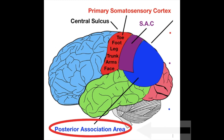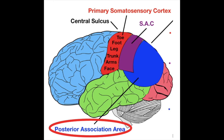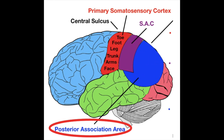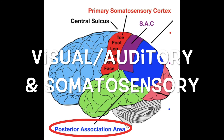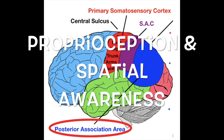The posterior association area dips into both the temporal and occipital lobes, making it a multimodal association area. It brings together visual input from the occipital lobe, somatosensory input from the parietal lobe, and auditory input from the temporal lobe. Its main function is proprioception and spatial awareness — the capacity to tell where you are in space and where all surrounding objects are.